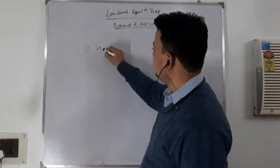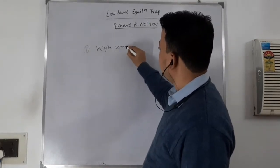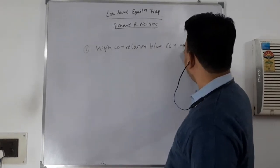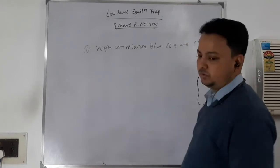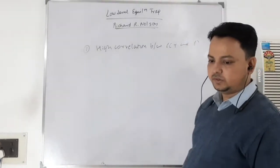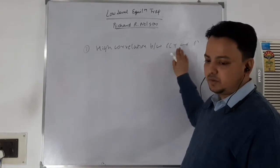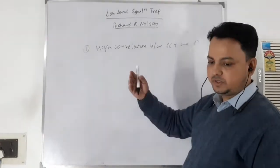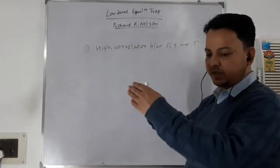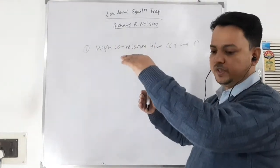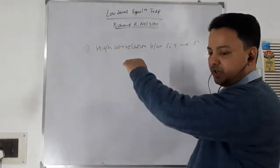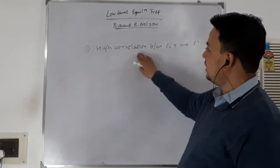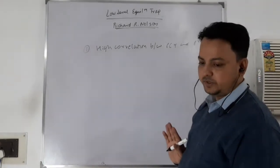First, there is a high correlation between per capita income and population growth. When per capita income increases, population will increase rapidly. It will reach a physical limit, stay there with increasing per capita income, and after that it will decline with increasing per capita income. So there is high co-ordination between per capita income and population growth.